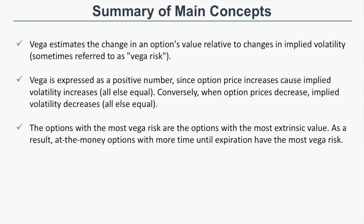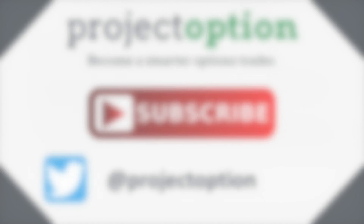Here's the summary of main concepts. Vega estimates the change in an option's value relative to changes in implied volatility. Alternatively, if an option increases or decreases by the amount of its vega without any change in stock price or time, implied volatility would be expected to change by 1%. Vega is expressed as a positive number since option price increases cause implied volatility increases, and vice versa. Options with the most vega risk are those with the most extrinsic value — at-the-money options with more time to expiration have the most exposure to changes in implied volatility.